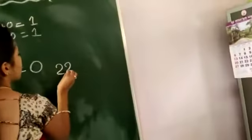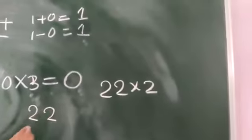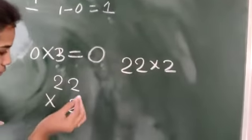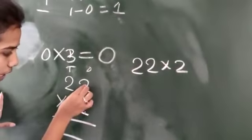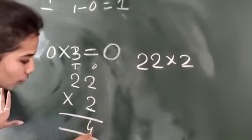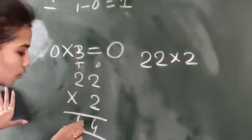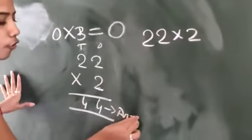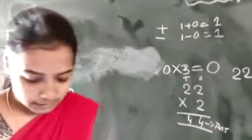Now you have a multiplication example. 22 into 2. This is your question. You have to write like this: 22 into 2. Ones and tens. 2 twos are - first you have to multiply with the ones. 2 twos are 4. Then this 2 with the tens. 2 twos are 4. Answer is 44. Understood?